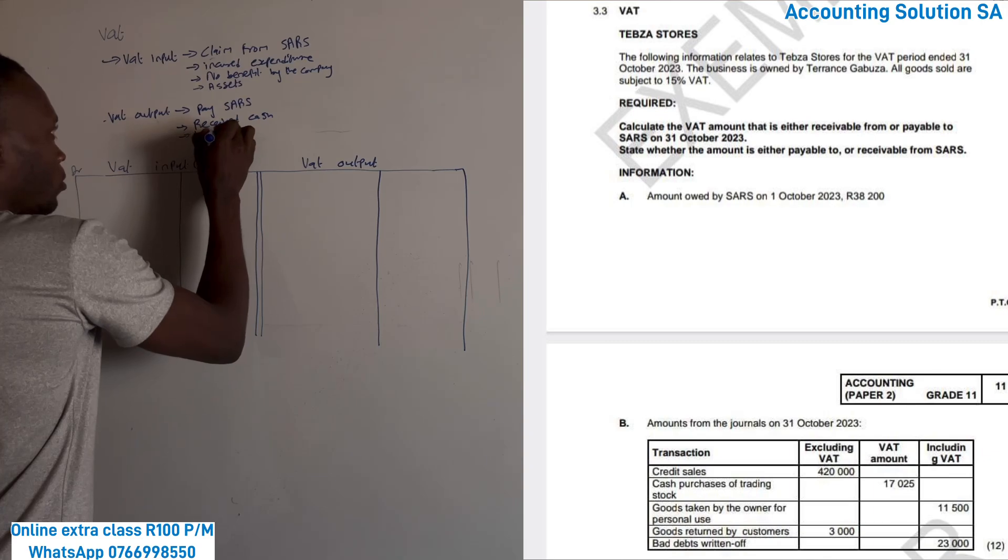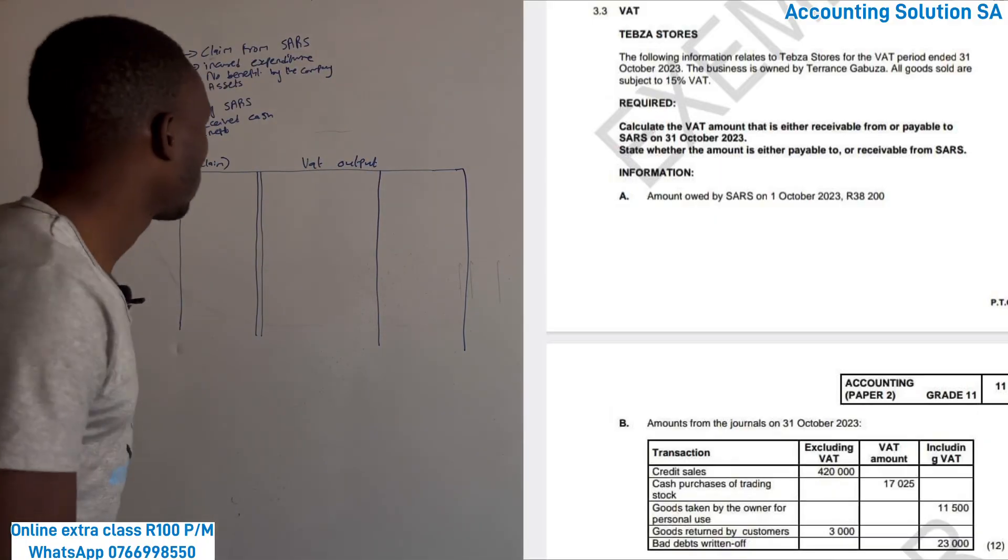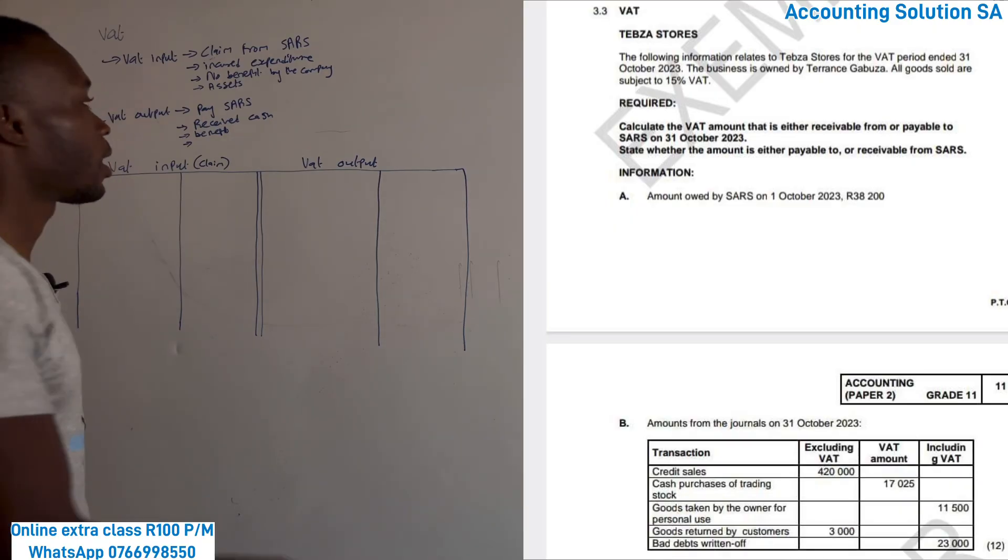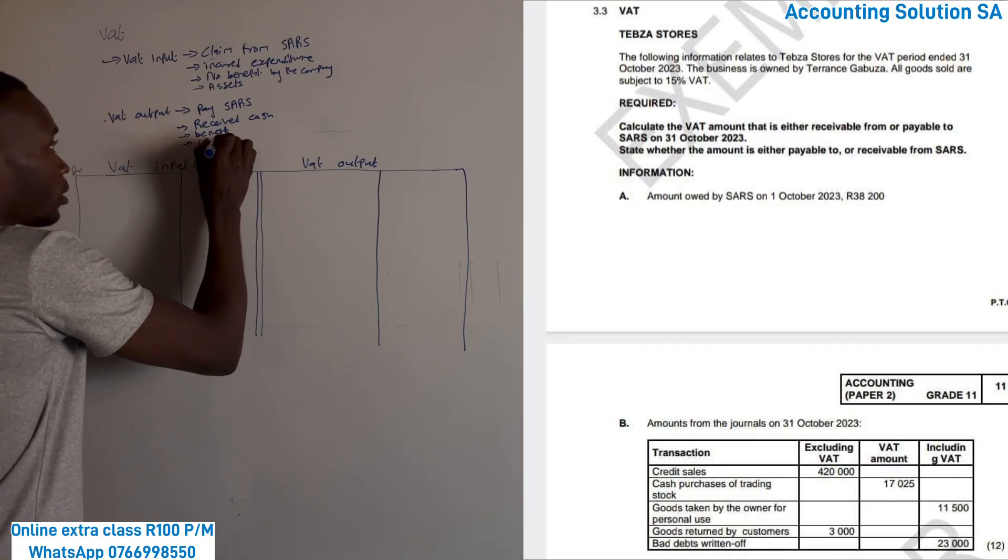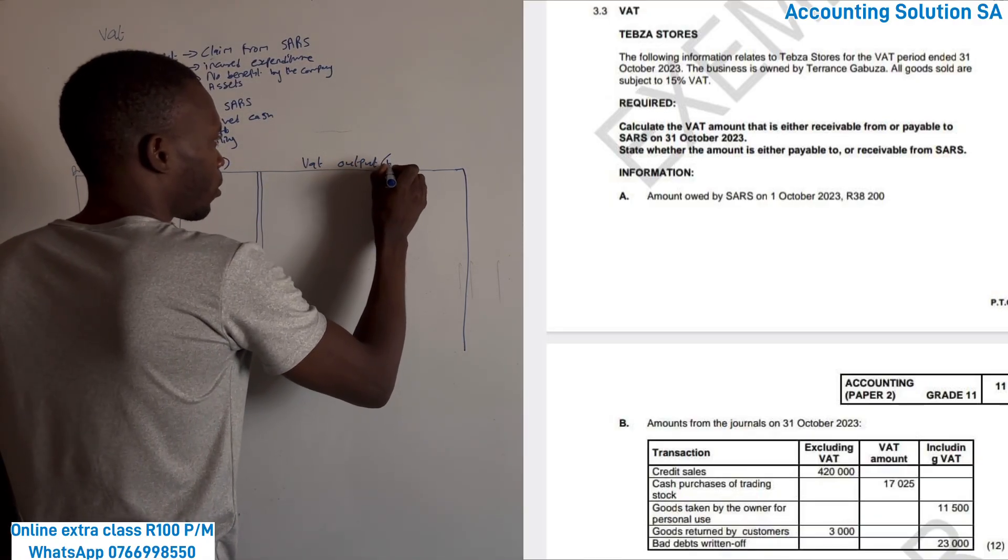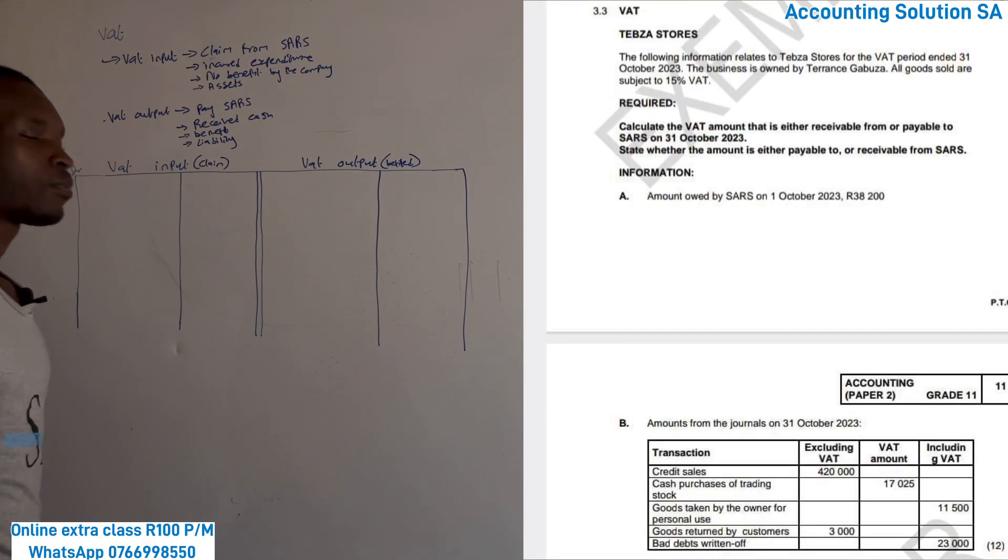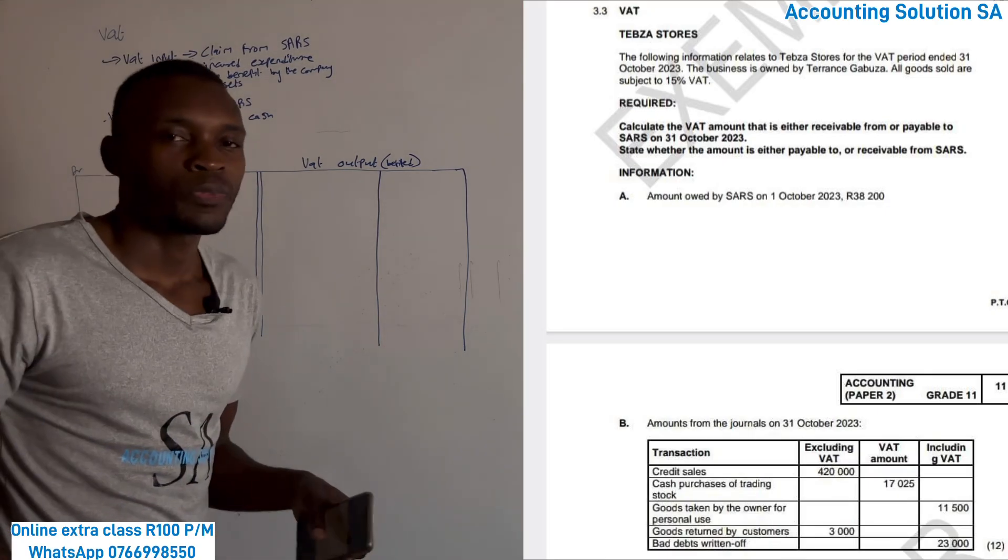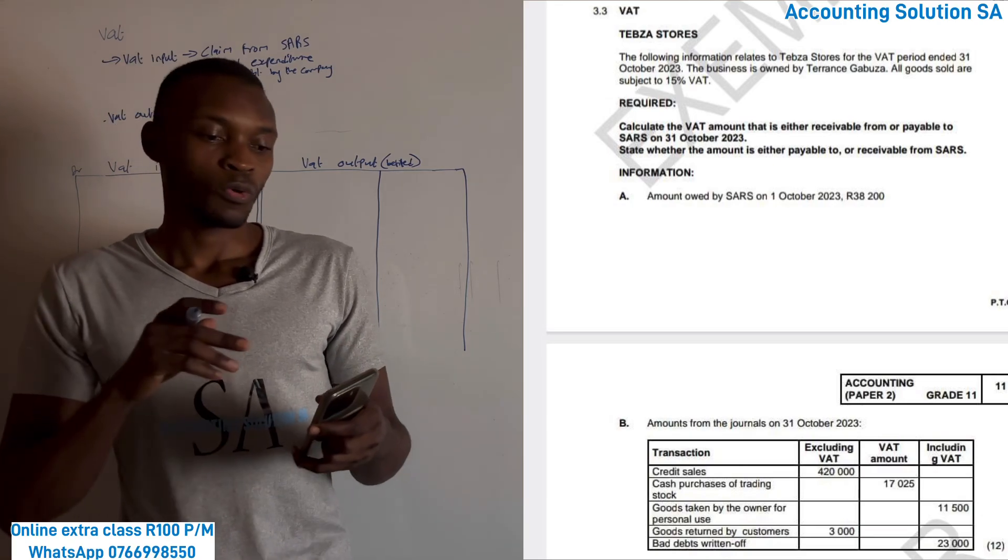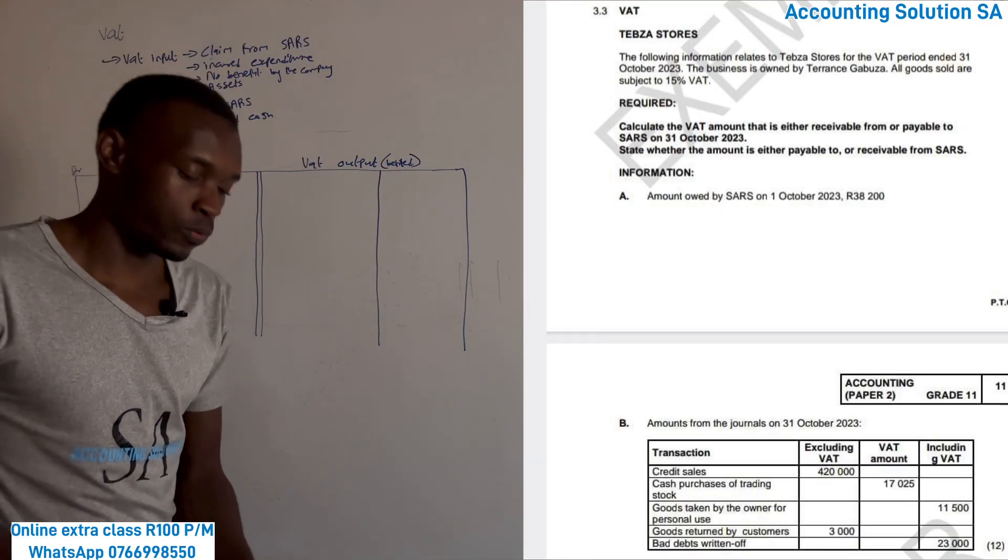And the other one, we benefit. Remember guys, when we sell to customer we benefit because customer gives us cash. And the last one, instead of assets, this is liability we owe. We benefited this side, we didn't benefit that's why we're claiming. So that's what you have to think about: benefit or no benefit. Once you have this basic that I was doing here guys, this chapter is going to be very simple for you. Let's start.